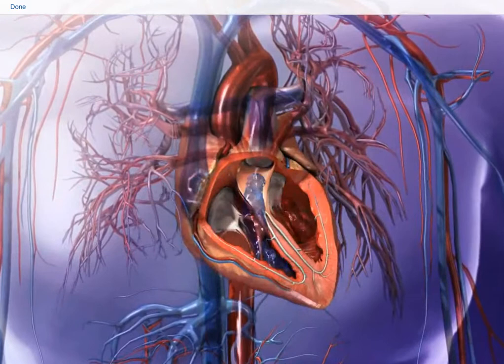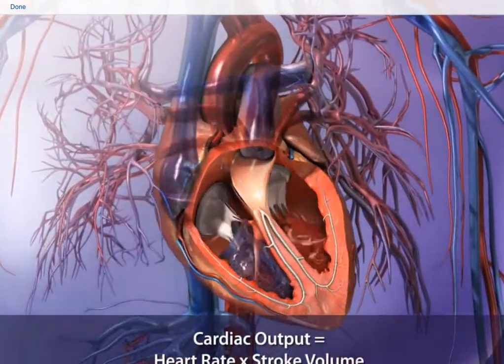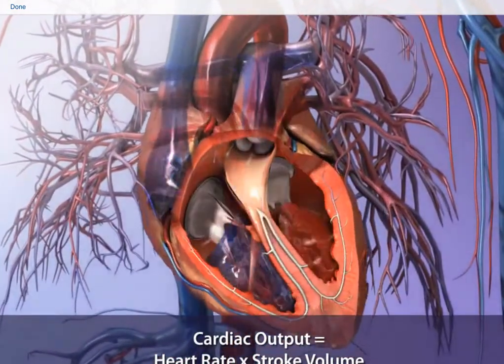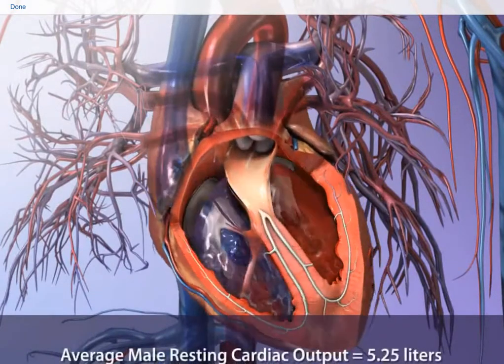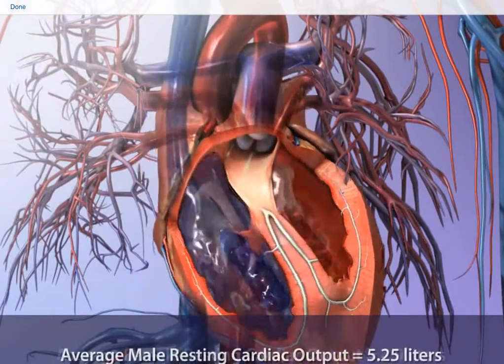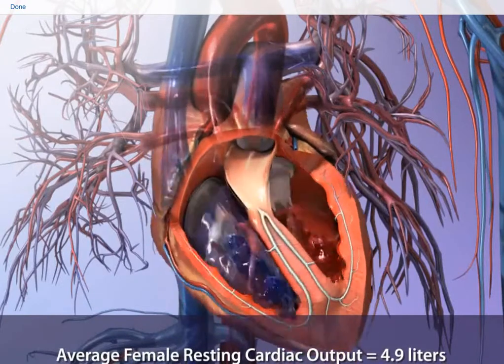To find the cardiac output volume, multiply the number of heartbeats in one minute by the stroke volume. At rest, the cardiac output for an average adult male is about 5.25 liters, 4.9 liters for an adult woman.